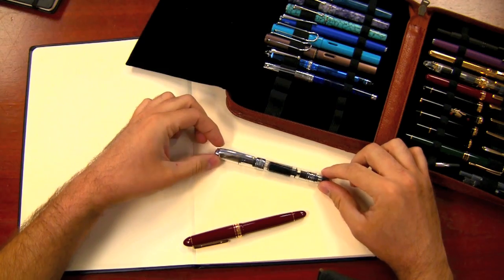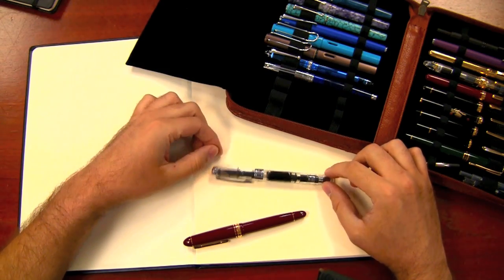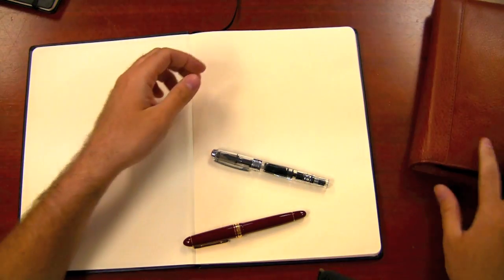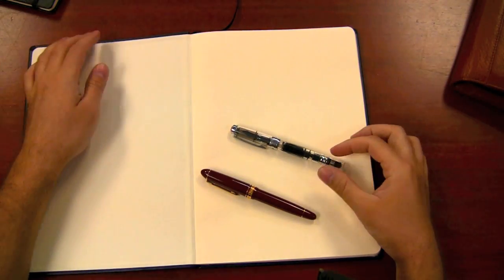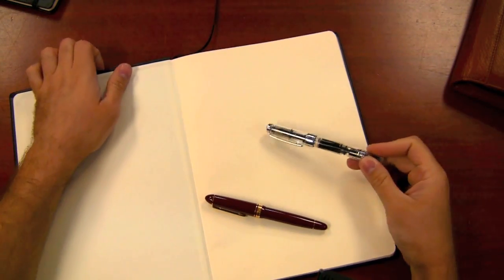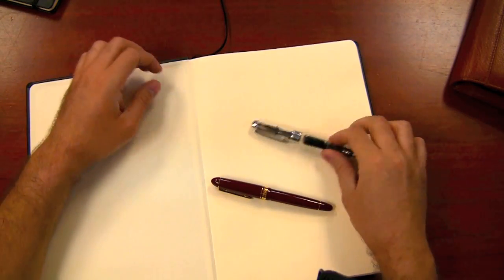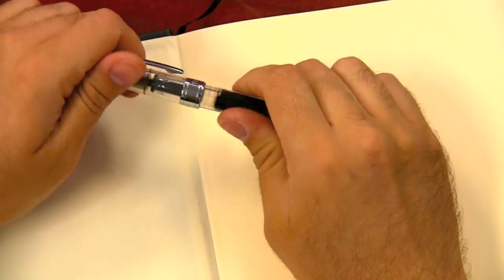I'm going to test out a Twsbi Diamond 540 with a 1.5 millimeter italic nib loaded up with Noodler's Black, and a Platinum President with a medium nib loaded with Diamine Majestic Blue. Let's go ahead and zoom in and show off a little bit of what this paper is like.